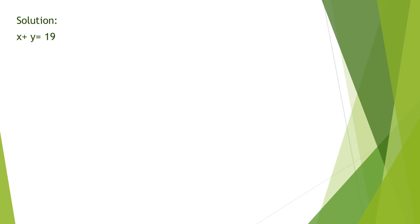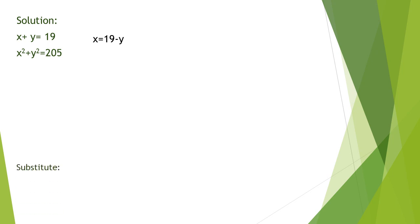For our solution, we write the first equation: x plus y equals 19, and the second equation: x squared plus y squared equals 205. We will use the substitution method. First, we find the value of x from the first equation: x equals 19 minus y. Then we substitute into the second equation, which becomes 19 minus y squared plus y squared equals 205.